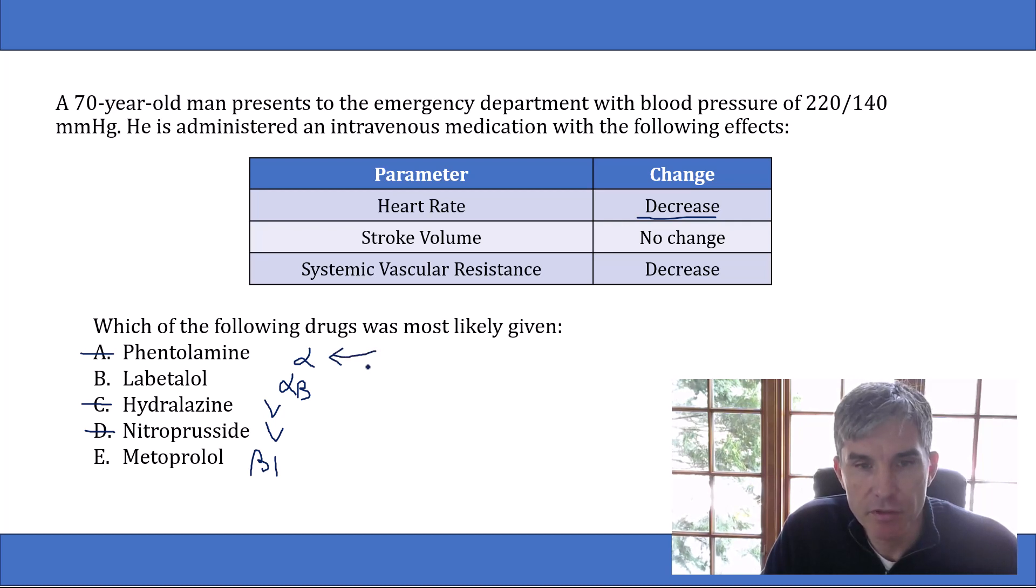Phentolamine, by blocking alpha receptors, lowers the systemic vascular resistance. But this triggers the sympathetic nervous system, and you get a compensatory increase in heart rate through the sympathetic nervous system. So heart rate goes up when you give a drug like phentolamine. The same thing is true of hydralazine and nitroprusside. These are vasodilators. They vasodilate arterioles in the periphery that lowers systemic vascular resistance, but it leads to a compensatory increase in heart rate. So now we're down to two answer choices, labetalol and metoprolol.